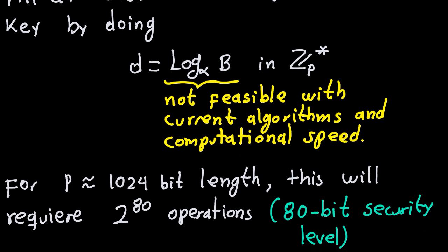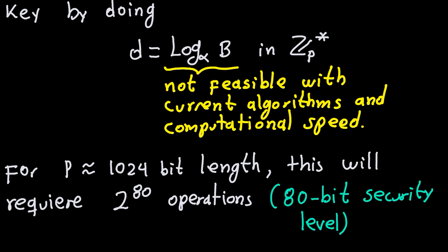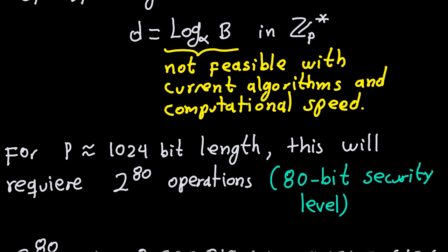The prime P is 1024-bit length in the initial DSA setup. Usually in that case, computing the discrete log will require about 2 to the 80 operations — and by operations I mean steps in a very general sense, which could be multiplications, additions, and all sorts of things. So the security level for this setup is 80 bits, meaning it requires 2 to the 80 steps to compute the discrete log.